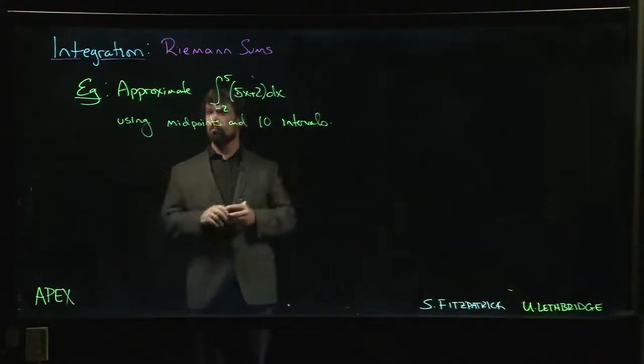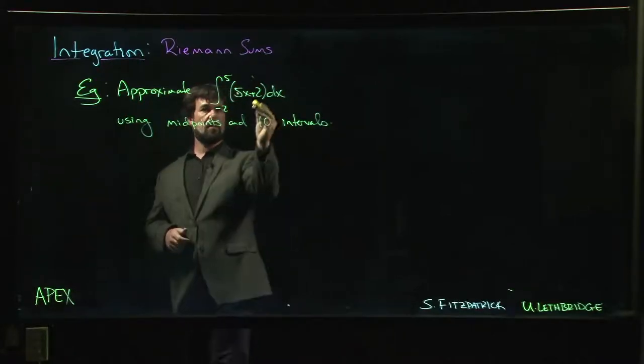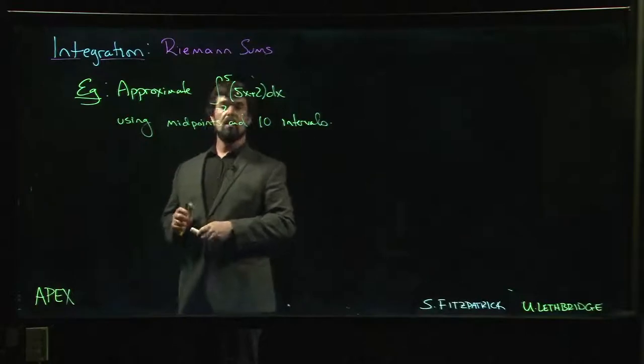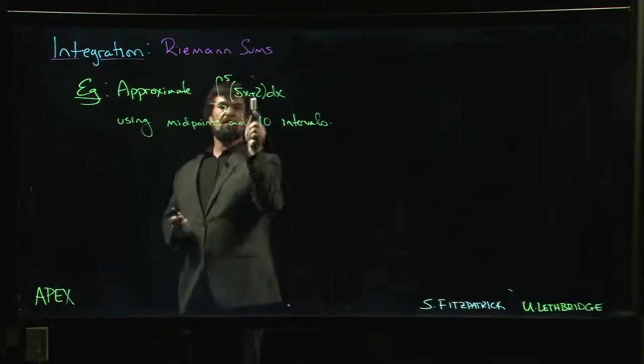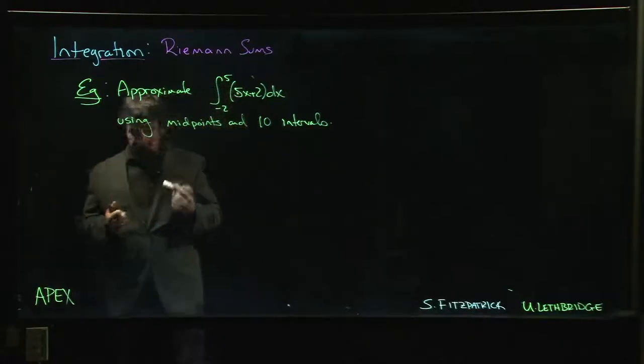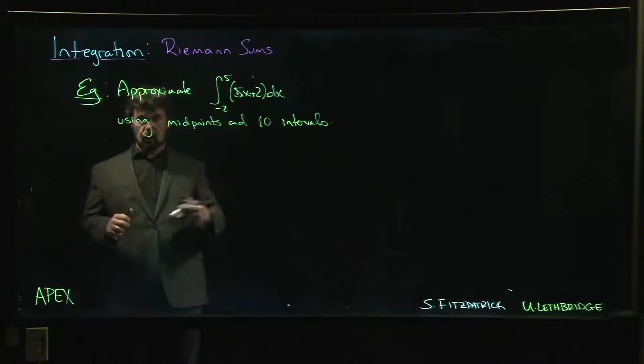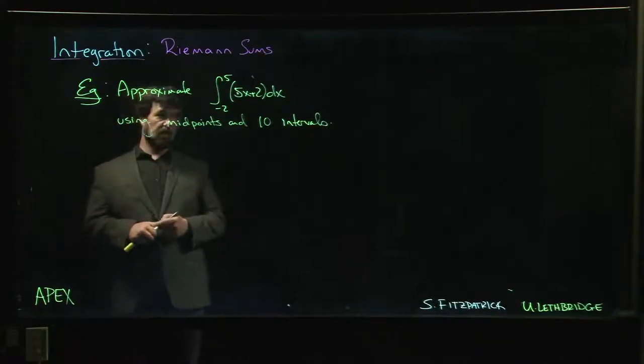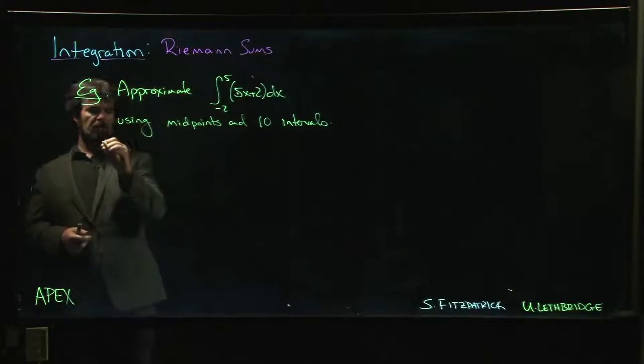All right, so let's put some of our formalism to the test here and work out the value of an integral. So we're going from minus 2 to 3, we've got a linear function, so a reasonably simple function, so we hope that things should work out fairly well for us here. So we want to set up our partition.